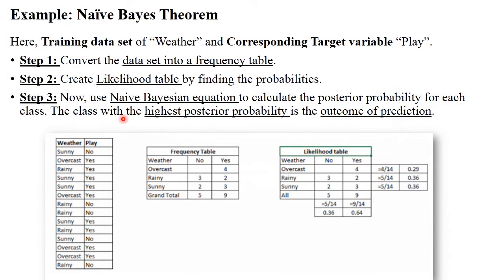Now here is an example of the Naive Bayes theorem. Consider this training dataset — the first column is 'Weather,' which is your training data, and 'Play' is your target variable. There are three types of weather: sunny, overcast, and rainy. Based on the weather, you determine whether players will play in the ground or not — for example, sunny: no; overcast: yes; rainy: yes. This dataset with weather and the corresponding play decision is given.